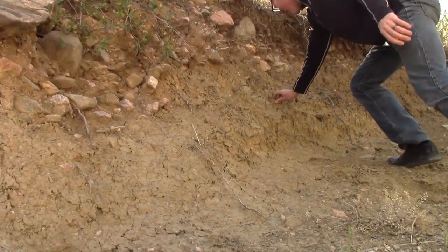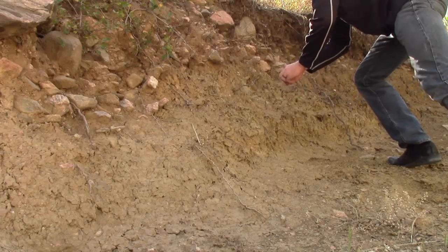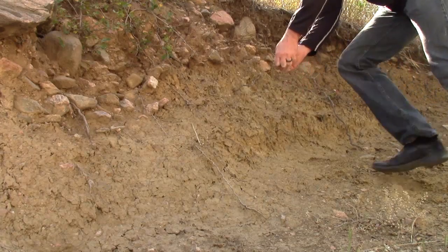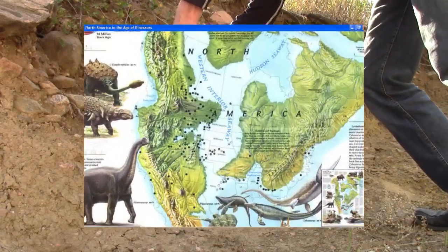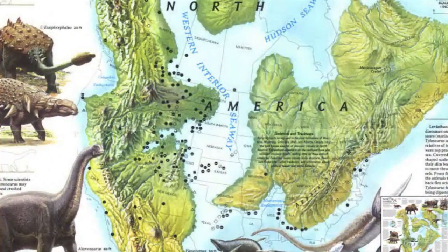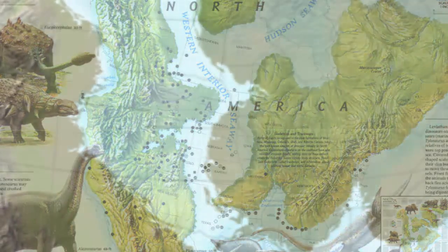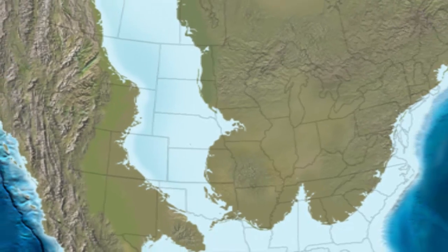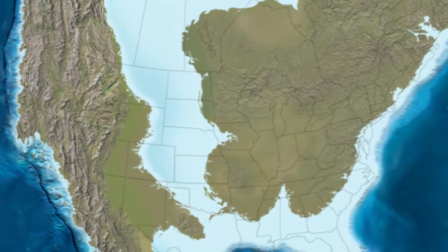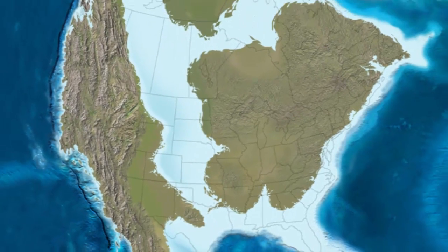The Cretaceous-aged Pierre Shale on the Colorado School of Mines campus contains marine fossils and can be mapped across the North American continent — larger than any river, floodplain, or lake could make.